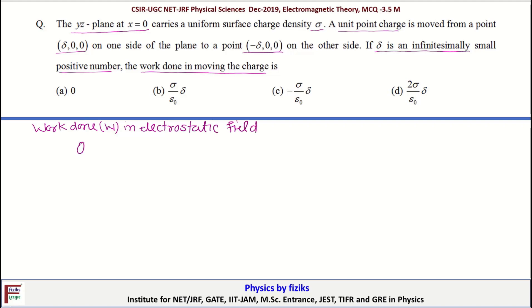So if we have a test charge Q and let us move this test charge from point A to another point B in an electrostatic field, then work done is always independent of path and it only depends on potential difference between two points.